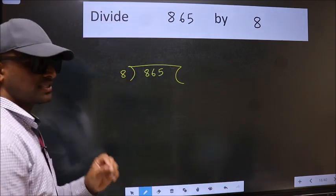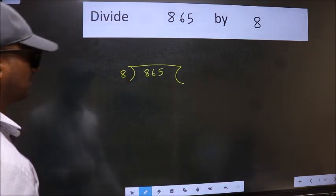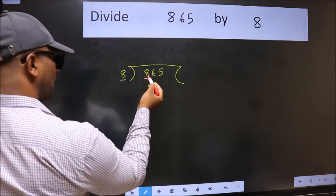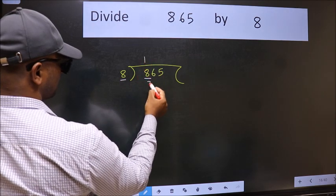This is step 1. Next, here we have 8 and here 8. When do we get 8 in the 8 table? 8 once is 8.